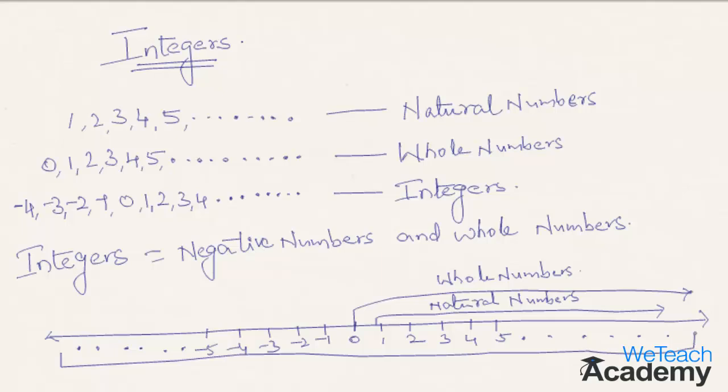But when you merge up everything, that's the negative numbers and the whole numbers, it's called integers.